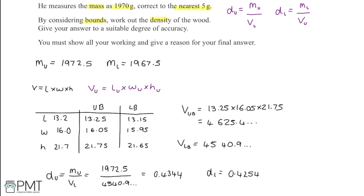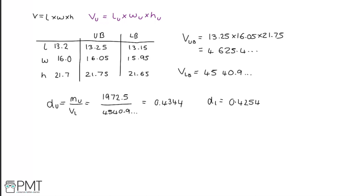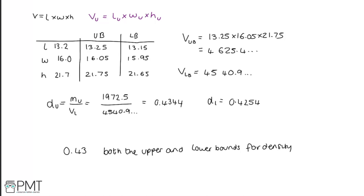The lower and upper bounds for density are very similar — in fact they're the same when rounded to two decimal places or two significant figures. Both 0.4344 and 0.4254 round to 0.43. So we give our answer as 0.43, justified because both the upper and lower bounds round to 0.43 to two decimal places. It wouldn't be appropriate to give any more decimal places.